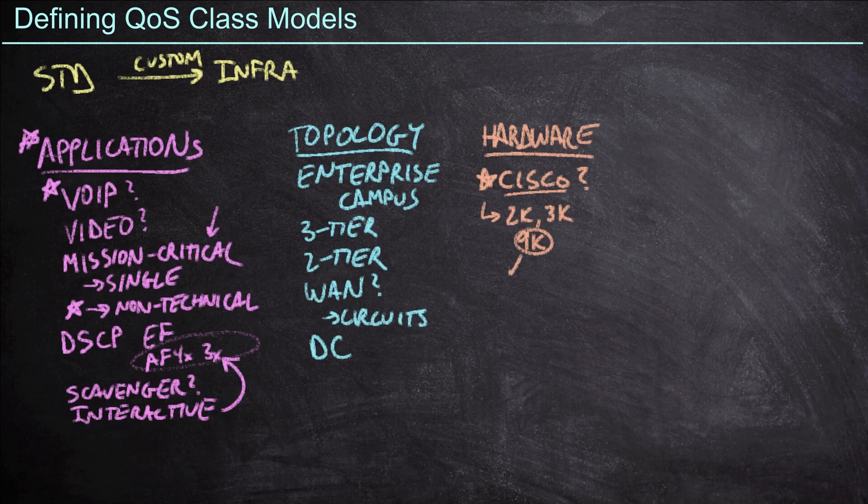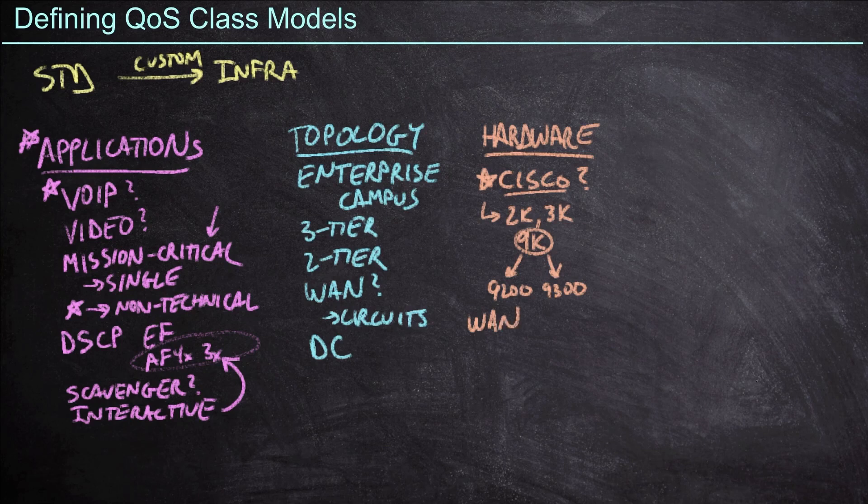And by the way, even if we are on Catalyst 9K, we probably need to understand, are we on 9200s, 9300s, 9400s, 9500s? But we need to understand the features and capabilities of each individual product family as well. Furthermore, we think about our routers. In a lot of cases, that's going to be on our wide area network. Are we built on classic ISR routers? Or hey, did we build on the new Catalyst 8Ks?